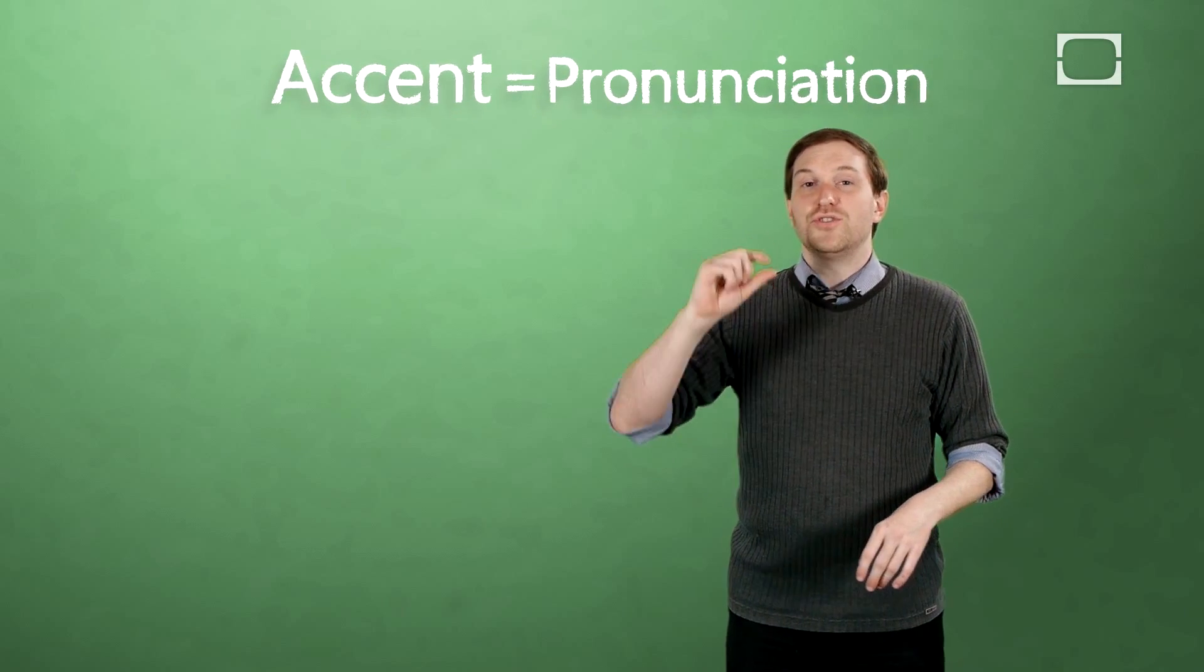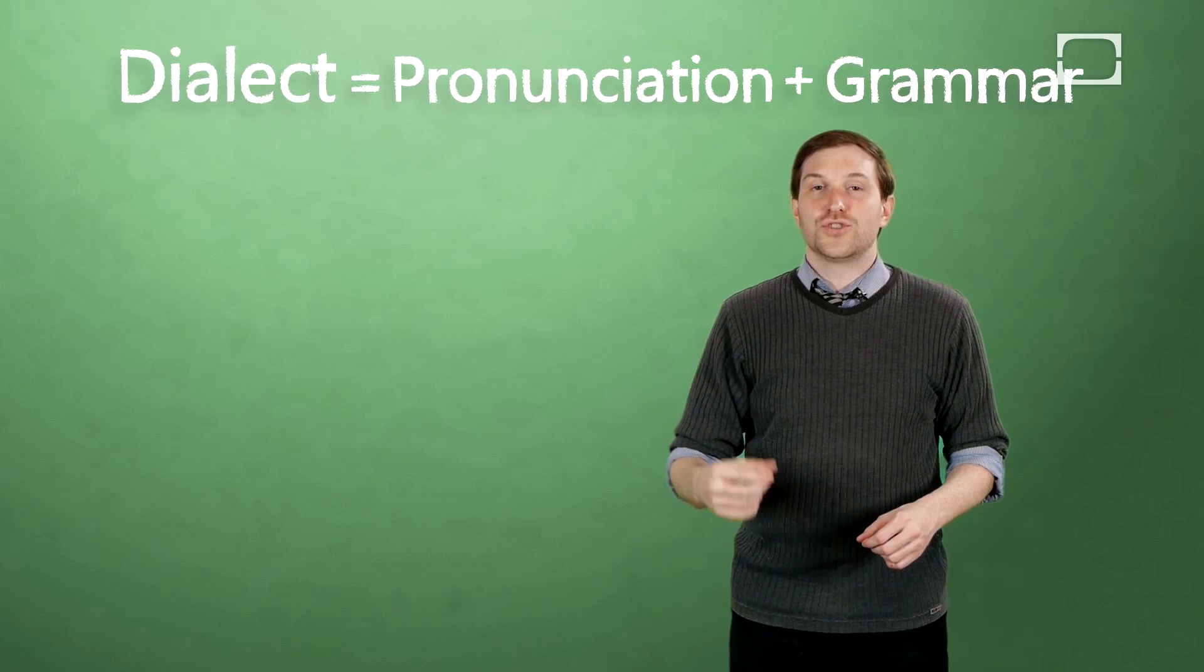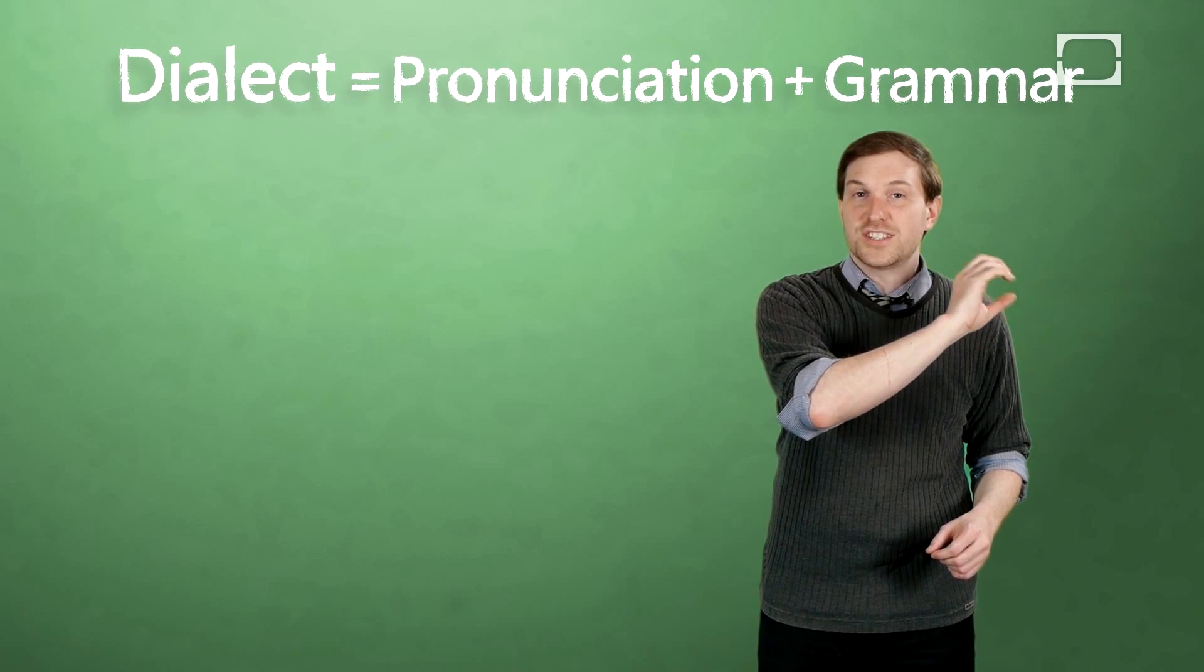First we'll define an accent. An accent is a smaller part of a bigger thing called a dialect. An accent refers to the way a language is pronounced, but a dialect refers to the way a language is pronounced as well as the grammatical rules used in speech.